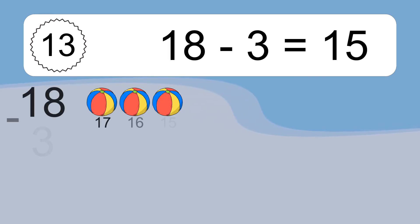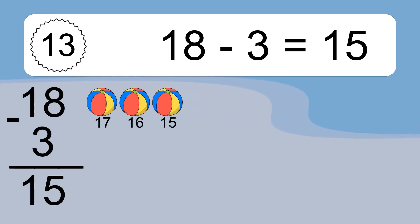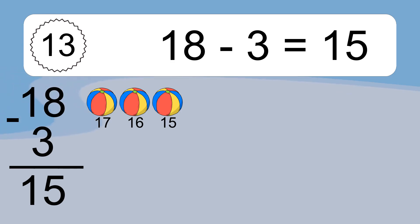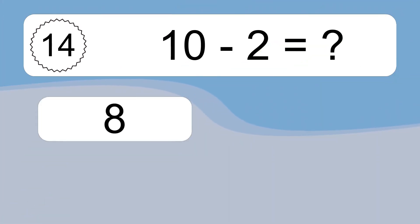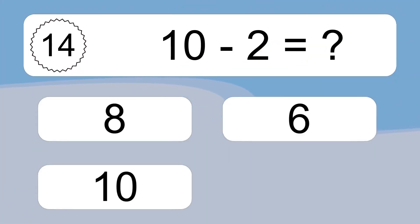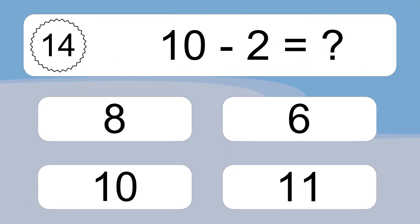Eighteen minus three equals what? Eighteen minus three equals fifteen. Let's count it: 17, 16, 15.